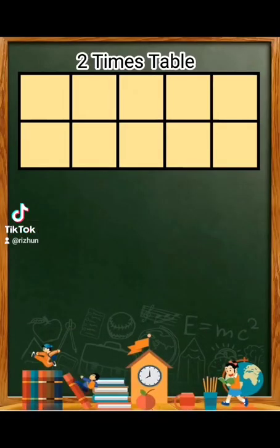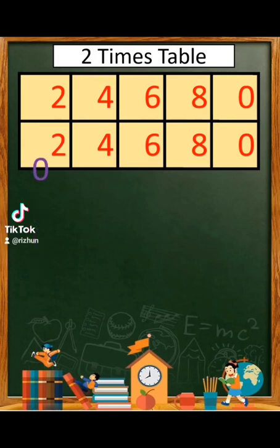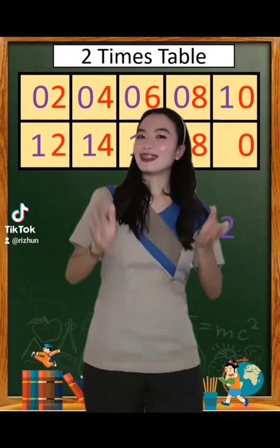First, let's draw a 5 by 2 grid of 5 columns and 2 rows. Inside the box, we just have to put 2, 4, 6, 8, and 0. And then after that, we have to add 0, 0, 0, 0, 1, 1, 1, 1, 1, and 2.